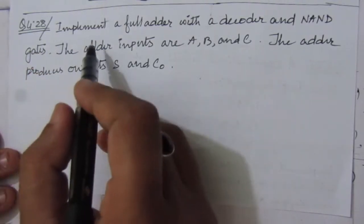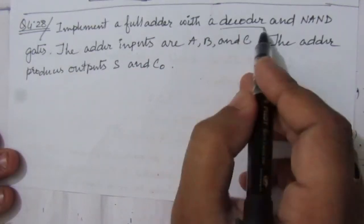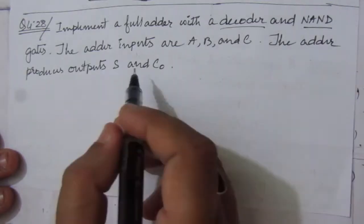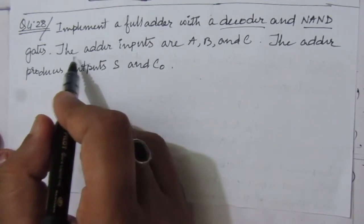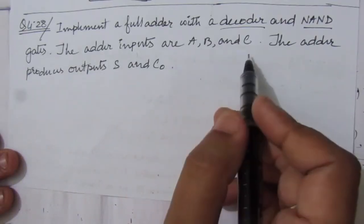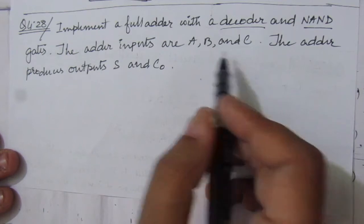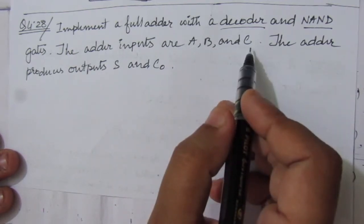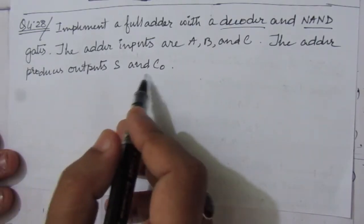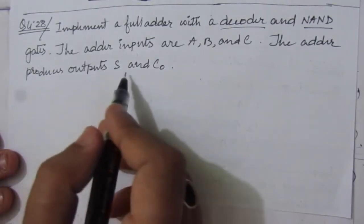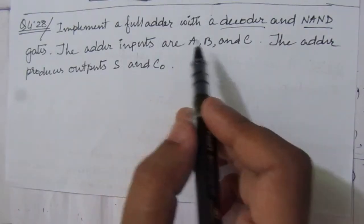The problem is: implement a full adder with a decoder and NAND gates only. We have to design a full adder with inputs A, B, and C, where A is the most significant bit and C is the least significant bit. The adder produces output sum (S) and carry out (C_out).